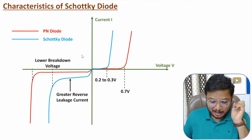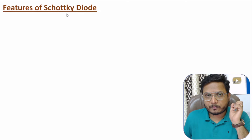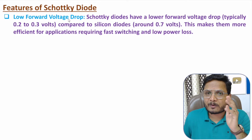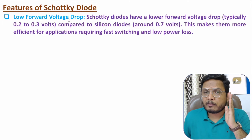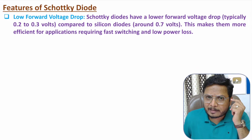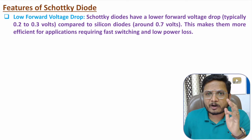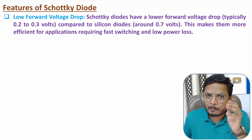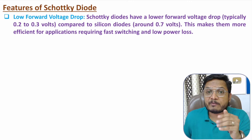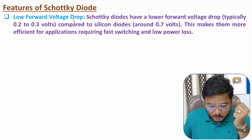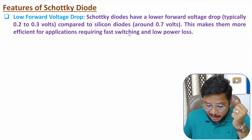Now I'll explain the key features of the Schottky diode. First, it has a low forward voltage drop of around 0.2 V to 0.3 V, compared to 0.7 V for a normal silicon PN junction diode. Because of this lower forward voltage drop, the Schottky diode has lower power loss. Additionally, the lower forward voltage drop also contributes to faster switching.